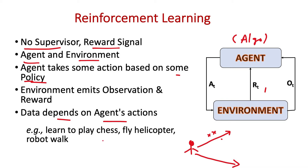Some examples of reinforcement learning include learning to play chess, where the agent takes steps and receives positive or negative rewards, and with lots of experience it learns how to play. Flying a helicopter is another example — crashing gives a negative reward, while following the desired trajectory gives a positive reward. Robot walking also comes under reinforcement learning. Thanks for watching and don't forget to subscribe to my channel for future videos.